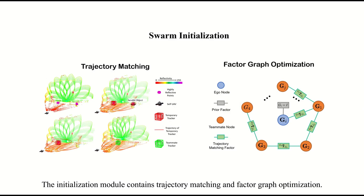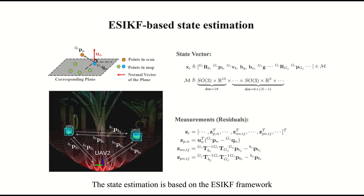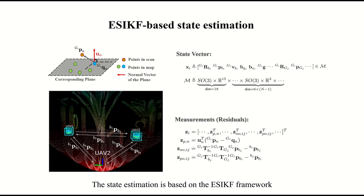The Initialization module contains trajectory matching and factor graph optimization. The state estimation is based on the error-state iterated Kalman filter framework, and a marginalization is proposed to improve computation efficiency.